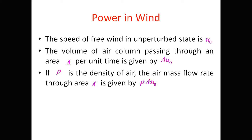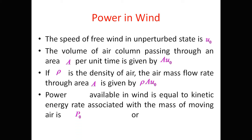If ρ is the density of air, the air mass flow rate through area A is given by ρ·A·u₀. This has been derived in previous lectures. The cross-sectional area of the tube is A, and the air mass flow rate through that area is ρ·A·u₀.